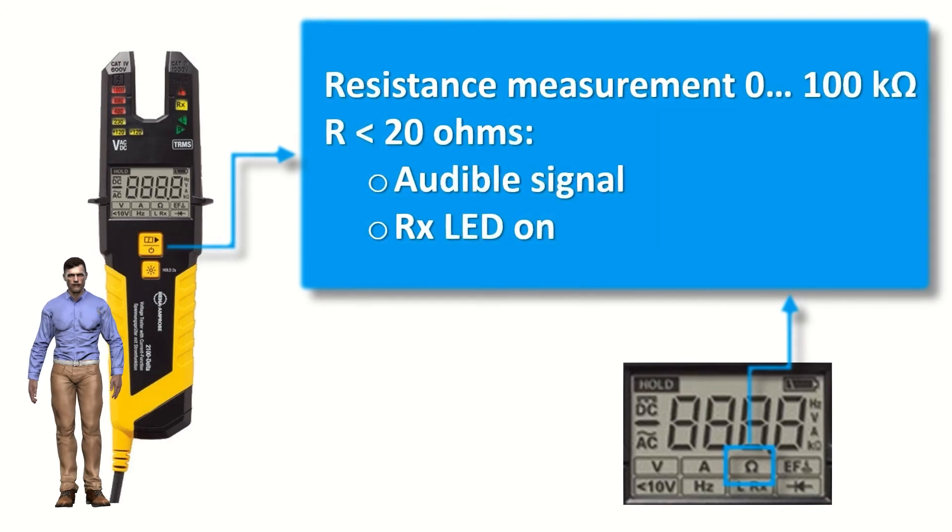By pressing the function button again, we can select the resistance measurement function, up to 100 kilo ohms. And below 20 ohms the clamp, in addition to displaying the measured value, also emits an audible signal and turns on the RX LED, in order to facilitate the technician's work, so that he does not need to see the screen to know that the measured resistance value is less than 20 ohms.